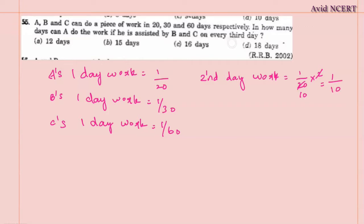On the third day, all 3 will be working - A, B and C. Therefore, third day work equals A plus B plus C. That is, 1/20 plus 1/30 plus 1/60.